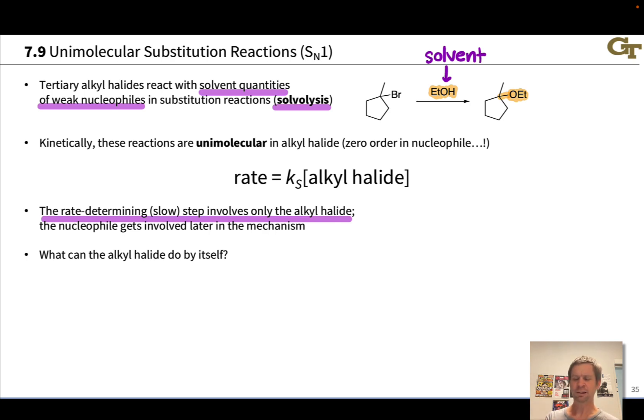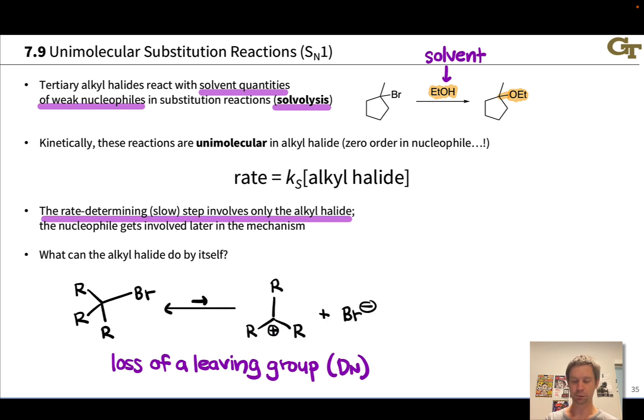Well, the alkyl halide contains a good leaving group by definition. It's going to be a chlorine, bromine, or iodine. And that halogen atom can depart with a pair of electrons, forming a halide anion in a loss of a leaving group step. And this forms the halide anion here, Br-, and a carbocation. And when the alkyl halide is tertiary, this carbocation is relatively stable.